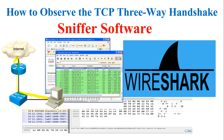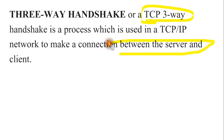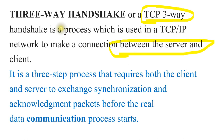I will show you how we can analyze that process, whether it is establishing or not. If we are accessing any website, it means the three-way handshake process has been established in three steps. This process is also known as TCP 3-way handshake — a process used in TCP/IP networks to make a connection between server and client computer. It is a three-step process that requires both client and server to exchange synchronization and acknowledgement packets.